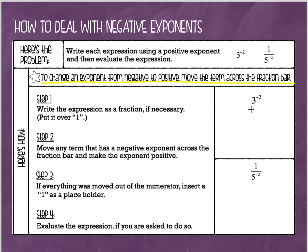Starting with our first example, which is 3 to the negative second power. Step one: we want to write this as a fraction if necessary. So 3 to the negative second power is clearly not a fraction — if I want to turn it into a fraction, I'm just going to put it over 1. We'll always put a 1 in the denominator.